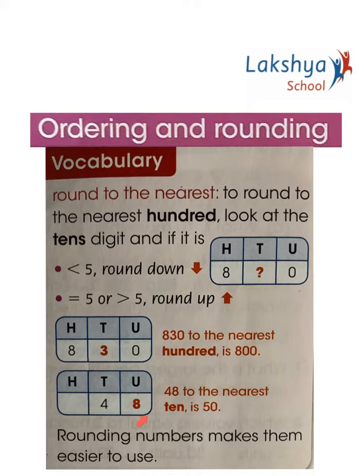Let's take another example: 48. We need to look at the units place — it is greater than 5, so this has to be rounded up. 48 rounded to the nearest ten is 50. Rounded numbers make them easier to use.